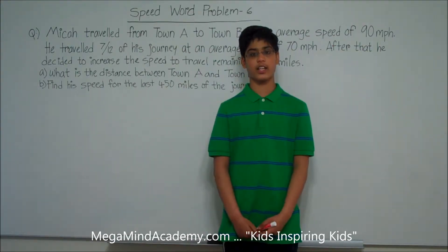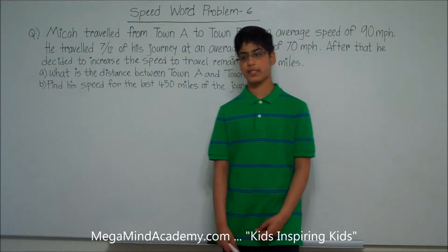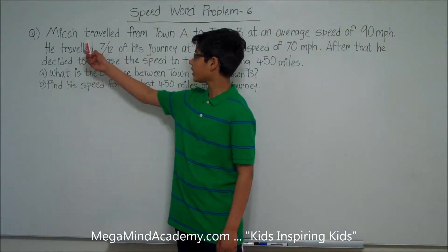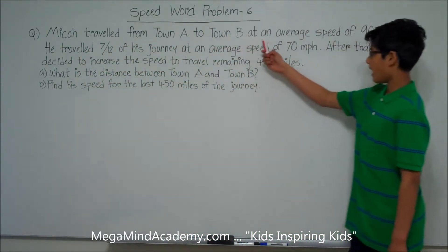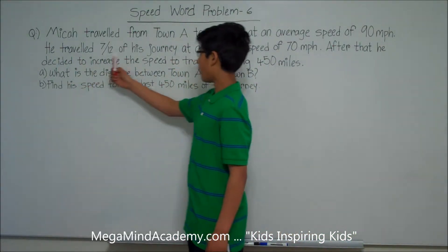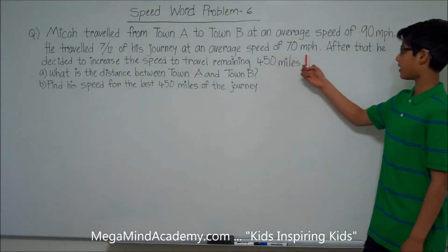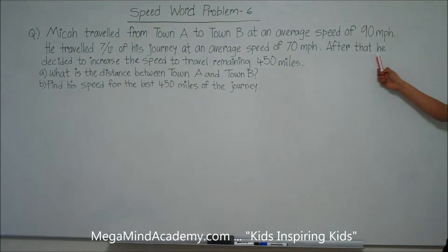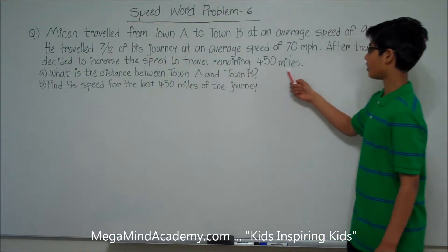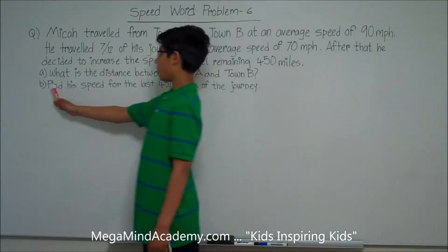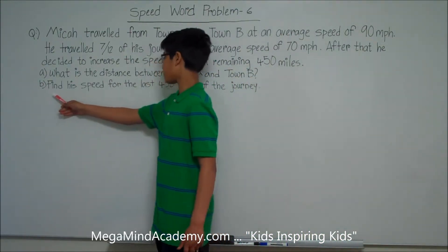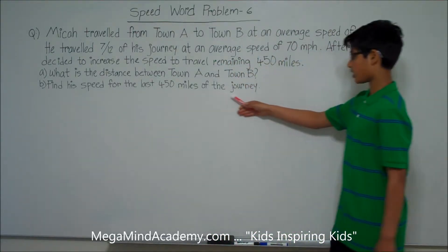Speed Word Problems. Today we're going to learn about speed word problems. Let's say we have a problem like: Micah traveled from town A to town B at an average speed of 90 miles per hour. He traveled 7/12ths of his journey at an average speed of 70 miles per hour. After that, he decided to increase the speed to travel the remaining 450 miles. A: What is the distance between town A and town B? And B: Find his speed for the last 450 miles of the journey.